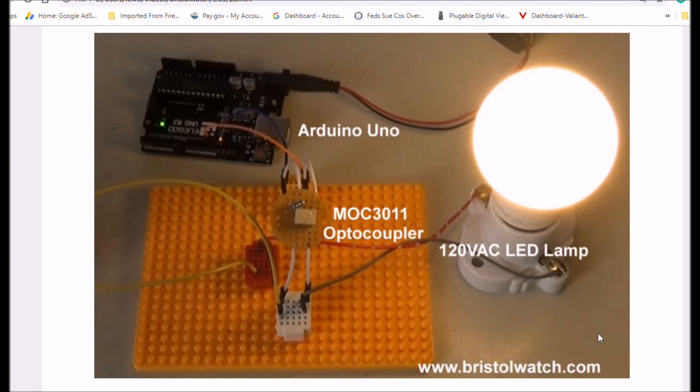Here's a photo of what you saw in the video. It's an Arduino Uno. I said MOC3010 in the video, but this one is a 3011. They're pretty similar with similar characteristics. This is an LED light, 650 lumens, drawing 8 watts of current. As you saw, it was being switched on and off, blinking with the Arduino Uno.